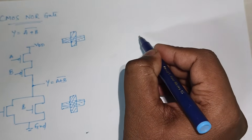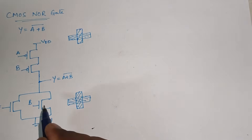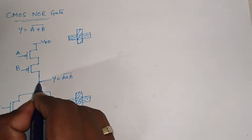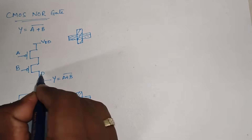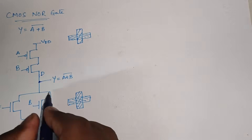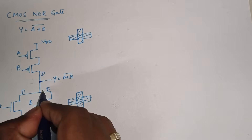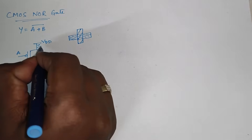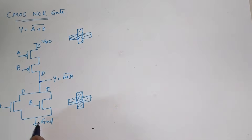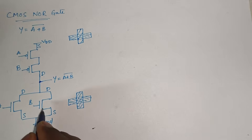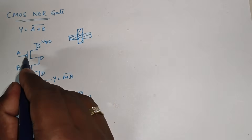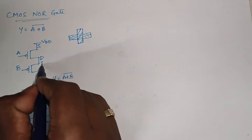Now let me write the layout. Before going to the layout we need to mark the terminals: source, drain, and gate. The rule is that from where we are going to take the output, that terminal should be the drain. So the drain of each transistor is where the output is taken, and the drains are connected together. For the source of the pull-up transistors we connect VDD, and the sources of the pull-down transistors are connected to ground (zero volts). The remaining terminals follow accordingly — if one side is source, the other is drain.